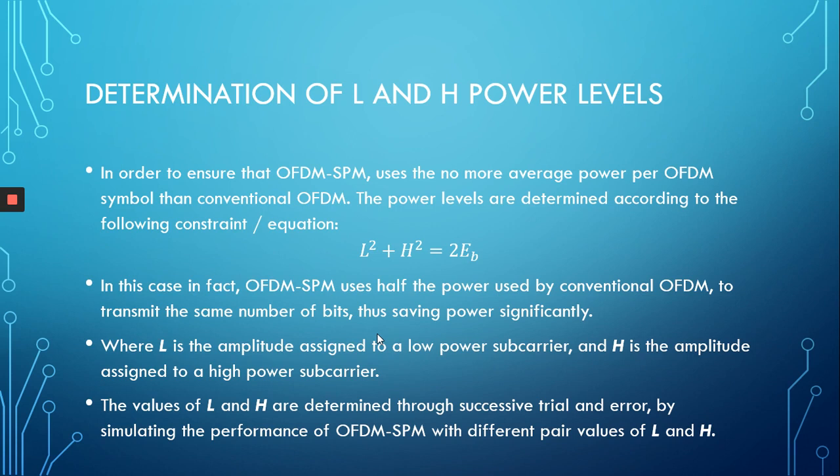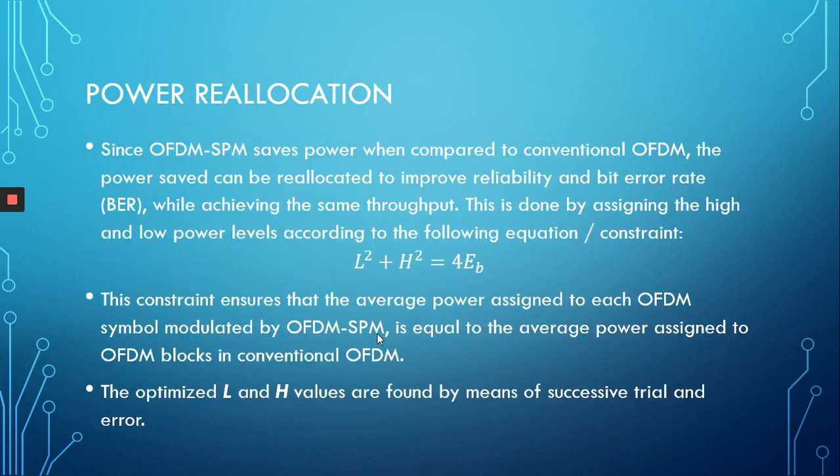As for the values of L and H, to determine the optimum values — since they affect the scheme's overall performance — we go through exhaustive trial and error to find the best values for optimal performance. Now, OFDM-SPM saves power compared to conventional OFDM, but this gives us a choice: do we want to save this power, or do we want to use it to improve the performance of OFDM-SPM and get a better bit error rate?